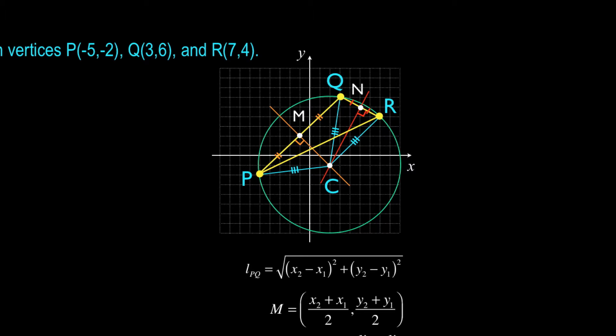So now it's a matter of locating point C. If I know point C, I can find the length of any one of those radii, C to R, C to Q, or C to P. It doesn't really matter. All I need are those coordinates.